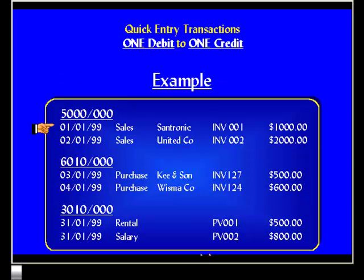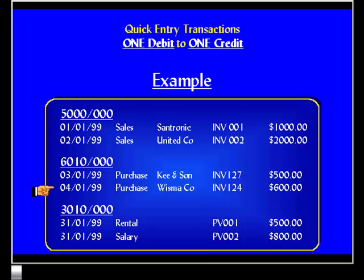To demonstrate the data entry method under the Quick Entry transaction option, we'll use the following example transactions. We'll be doing a data entry for two sales — one to Centronic and one to United Company. And we'll be doing two purchases, one from Key & Sun and another from Wisma Company. We'll also be entering two transactions relating to expenses: one for rental and one for salary.